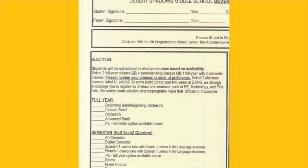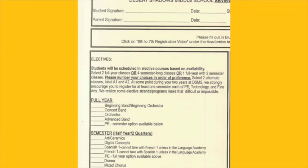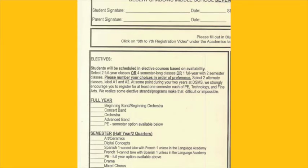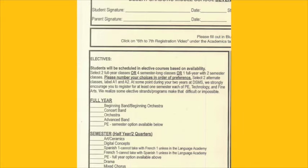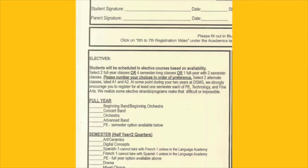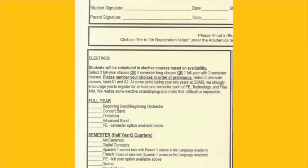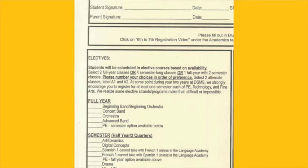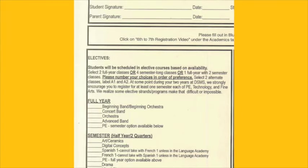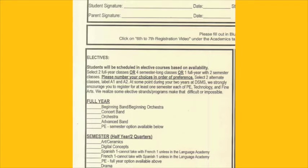If you check one of these options under full year, you will be in that class from August through May. The bottom half shows semester-long classes, which last half of the school year. These include art and ceramics, digital concepts, Spanish one, French one, PE, drama, mixed chorus, guitar, percussion, neuroscience and forensics, and principles of engineering. As you can see, we offer a lot of choices at Desert Shadows Middle School.